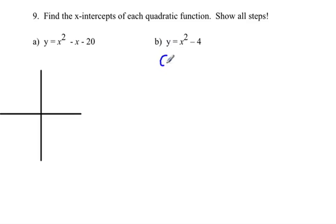So if we're going to sub in 0 for y, we can rewrite this as 0 is equal to x squared minus 4.